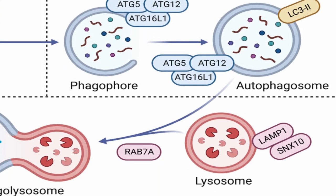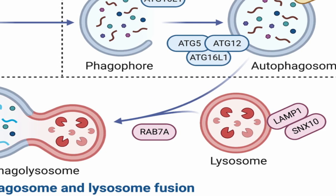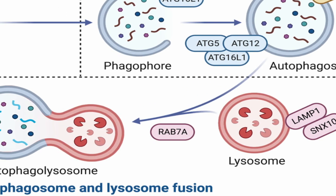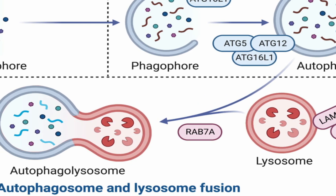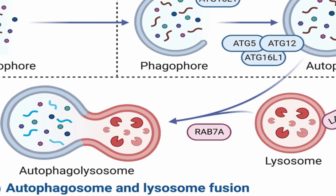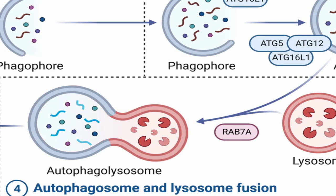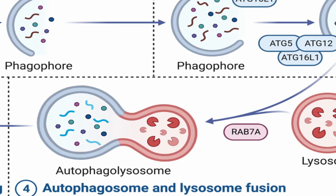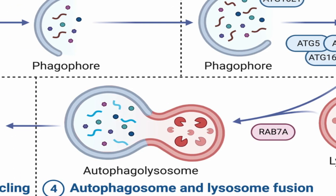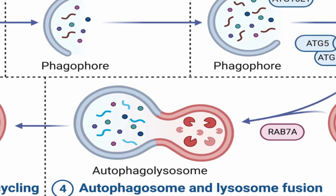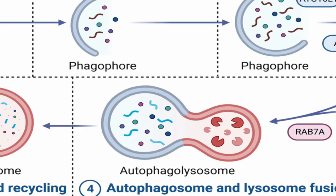The fully formed autophagosome fuses with a lysosome to form an autolysosome, which contains the degradative enzymes required to break down the engulfed cargo. Fusion is mediated by SNARE proteins, RAB-GTPases and other factors, ensuring the delivery of the autophagosome's contents to the lysosome.